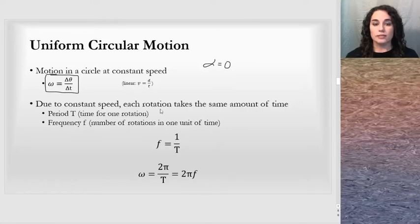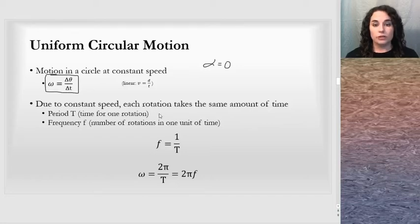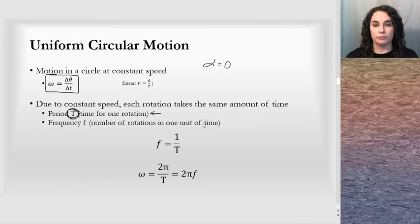Due to this constant speed, each rotation takes the same amount of time. You may be familiar with the fact that we call this a period. The time for one rotation is the period, designated with a capital T — T for time.